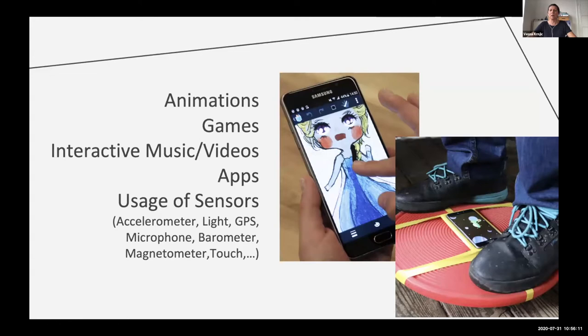So what can a user do with Pocket Code? Same like with Snap and Scratch, build animations, program games, interactive music apps. And the most advantage of Pocket Code and of our apps is that a user can use all sensors of a mobile phone, for example the light sensor or the GPS sensor or the magnetometer sensor.